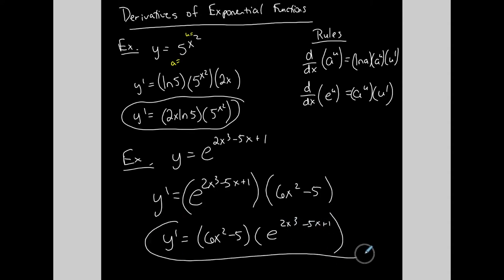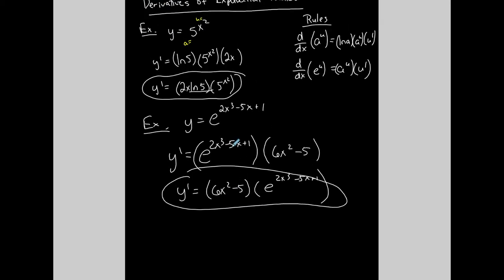So to summarize: if the base is a number other than e, you take ln of the base times the function times the derivative of the exponent and simplify if you can. If the base is e, you take the function and multiply it by the derivative of the exponent and simplify if you can.